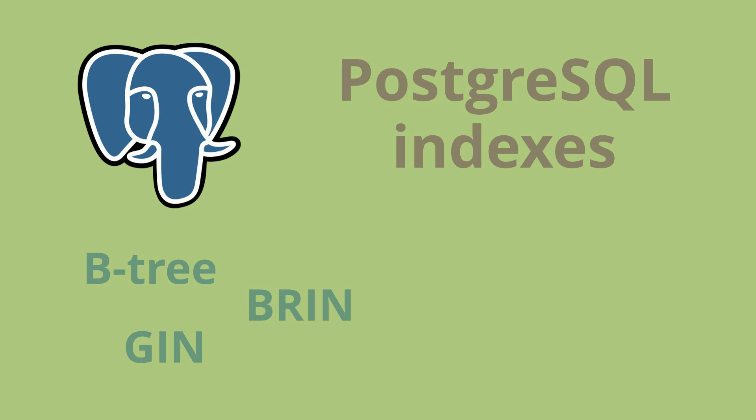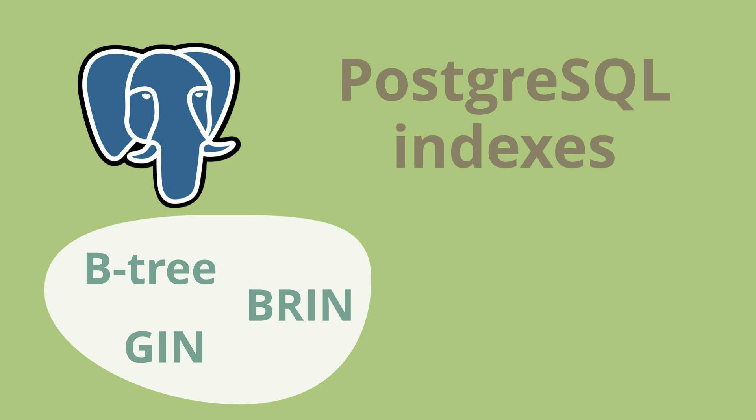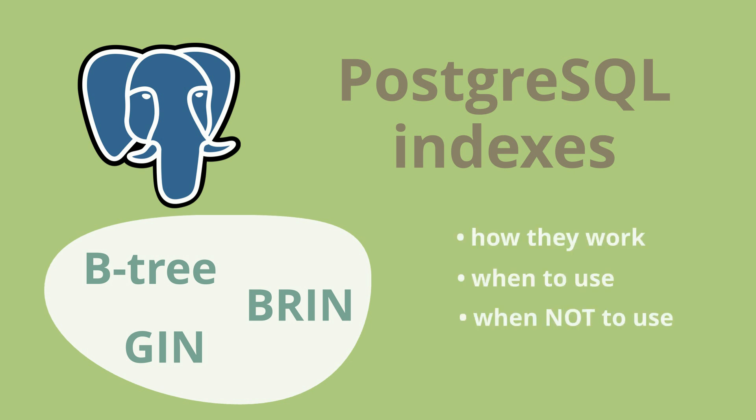Hey everyone! Welcome to this video where we are going to break down three powerful types of indexes in PostgreSQL – btree, gin, and brin. We'll cover how they work internally, when to use them, and when they might not be the best choice – all in simple and easy-to-understand terms.